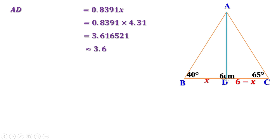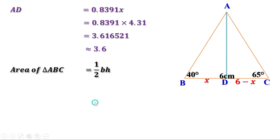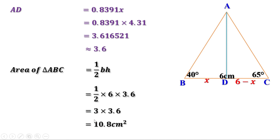We have already seen that AD equals 0.8391X. Substituting X equals 4.31, AD equals 0.8391 into 4.31. Multiplying, we get approximately 3.6 centimeters. Now we have H. Area equals half BH, where B is 6 centimeters and H is 3.6 centimeters. So area equals half into 6 into 3.6, which equals 3 into 3.6, giving 10.8. Therefore, the area of this triangle is 10.8 centimeters squared.